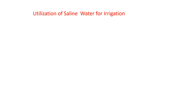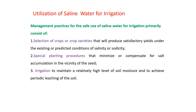Let us see how saline water is utilized for irrigation purpose. There are different management practices for the safe use of saline water. Irrigation primarily consists of selection of crops or crop varieties that will produce satisfactory yields under the existing or predicted condition of salinity or sodicity, and irrigation to maintain a relatively high level of soil moisture and to achieve periodic leaching of the soil, so that the soil becomes neutral.